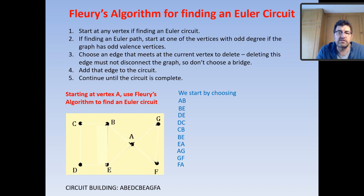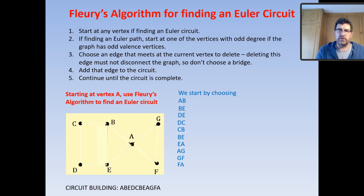Continuing: we choose DE, delete it — circuit is A, B, E, D. Delete DC, C is now part of the circuit. From C go back to B then to E — the left part is completely covered. Now we can only go to A, from A we go to G or F — choose G, then back to F, then back to A. Circuit is A, B, E, D, C, B, E, A, G, F, A. That is Fleury's algorithm applied to create an Euler circuit — start at any vertex, delete edges, never delete a bridge.